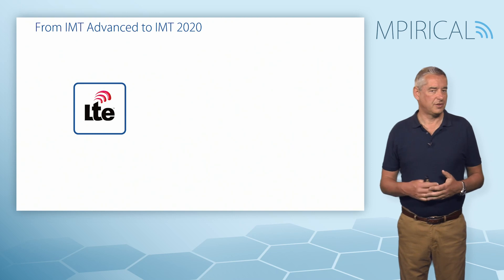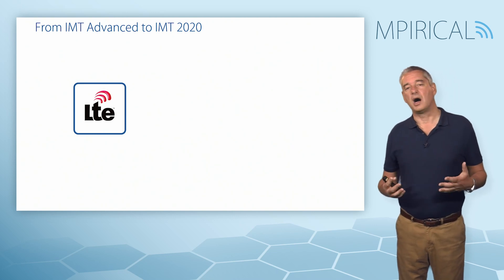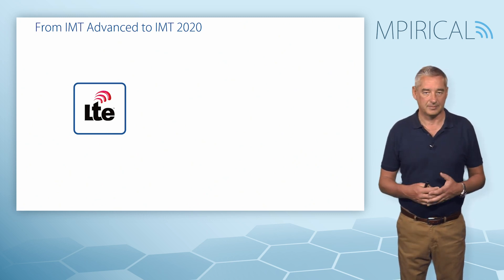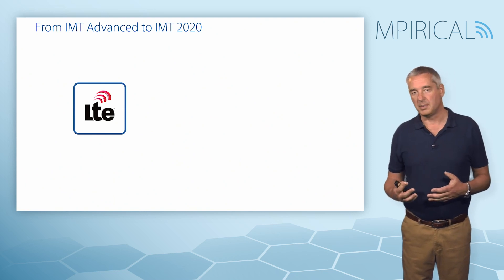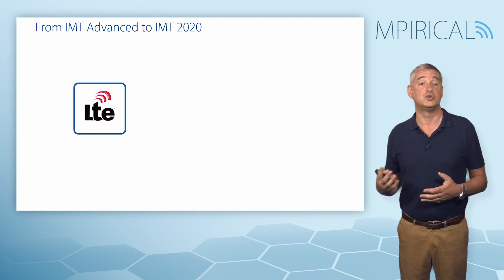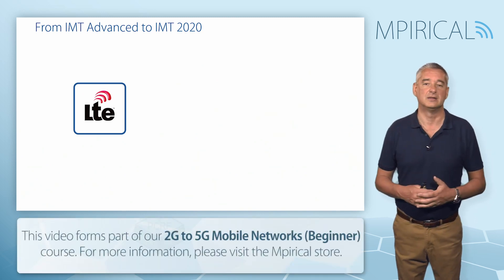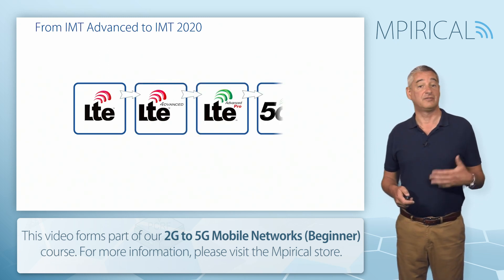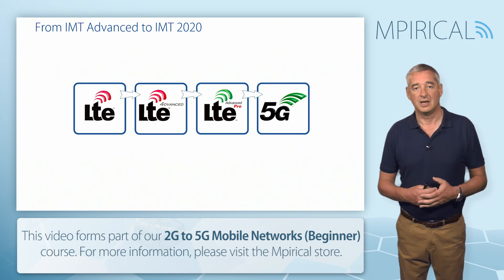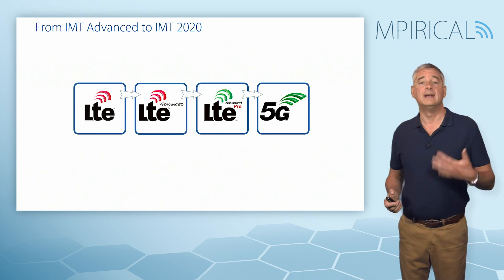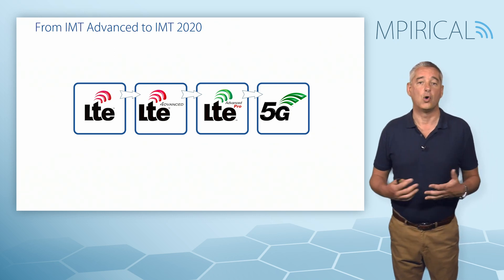Back in 2003, the ITU-R set about the design aspirations for what a 4G system should be, and they termed this IMT Advanced. This was later picked up by the 3GPP, who set about producing the technical specifications for a 4G network — we know this as LTE, long-term evolution. We've also seen LTE advance over the following years as LTE Advanced and LTE Advanced Pro, and now we lead towards 5G, or New Radio.